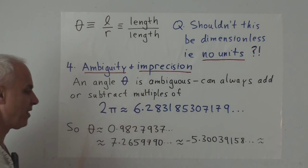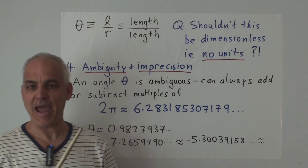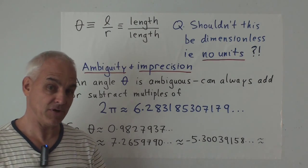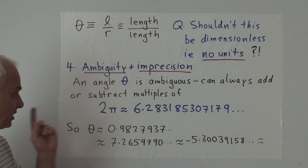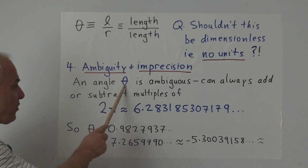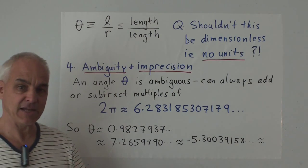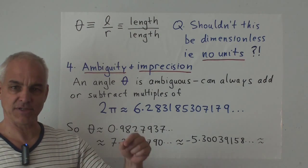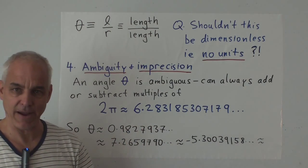All right, now we come to the fourth problem, the ambiguity and imprecision with which angles imbue geometry. This is a big subject. I'm going to have to say quite a lot about it, but let's start with the ambiguity, which is very clear. An angle θ is ambiguous in the sense that it's only determined up to 360 degrees. You can always add 360 degrees and you have essentially the same angle.